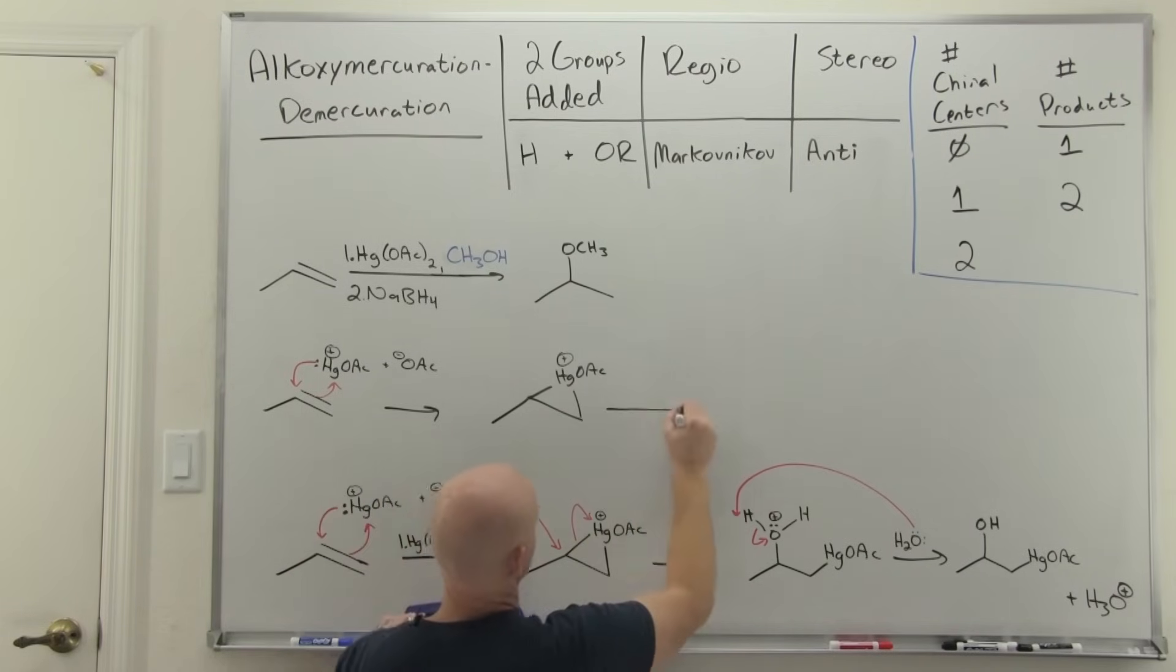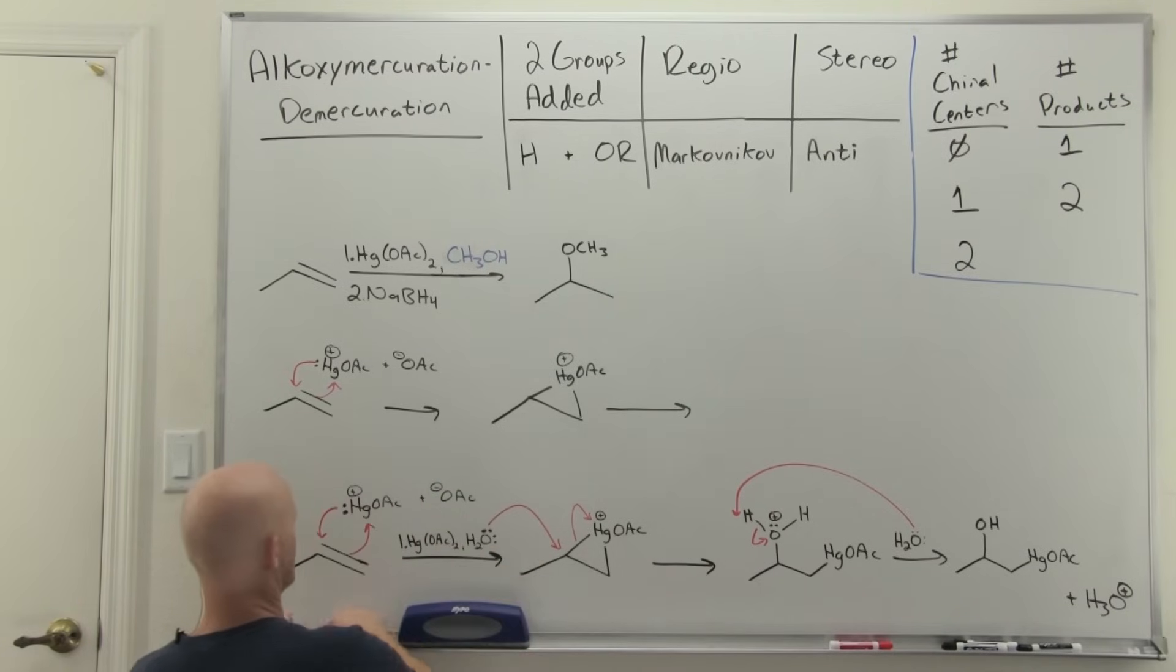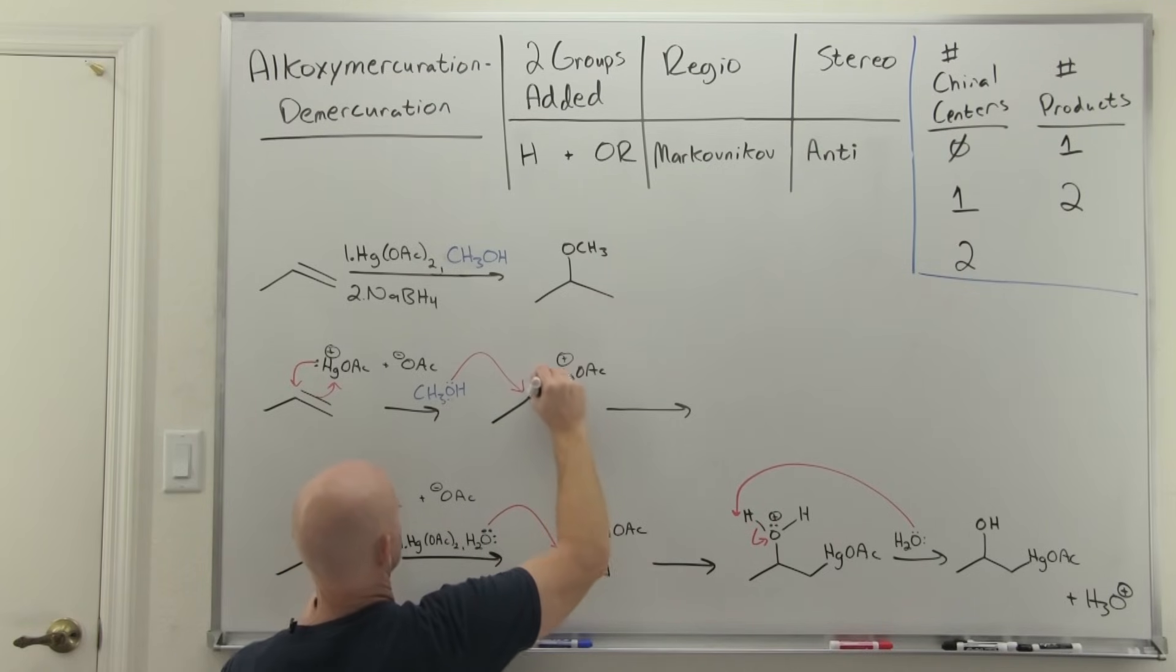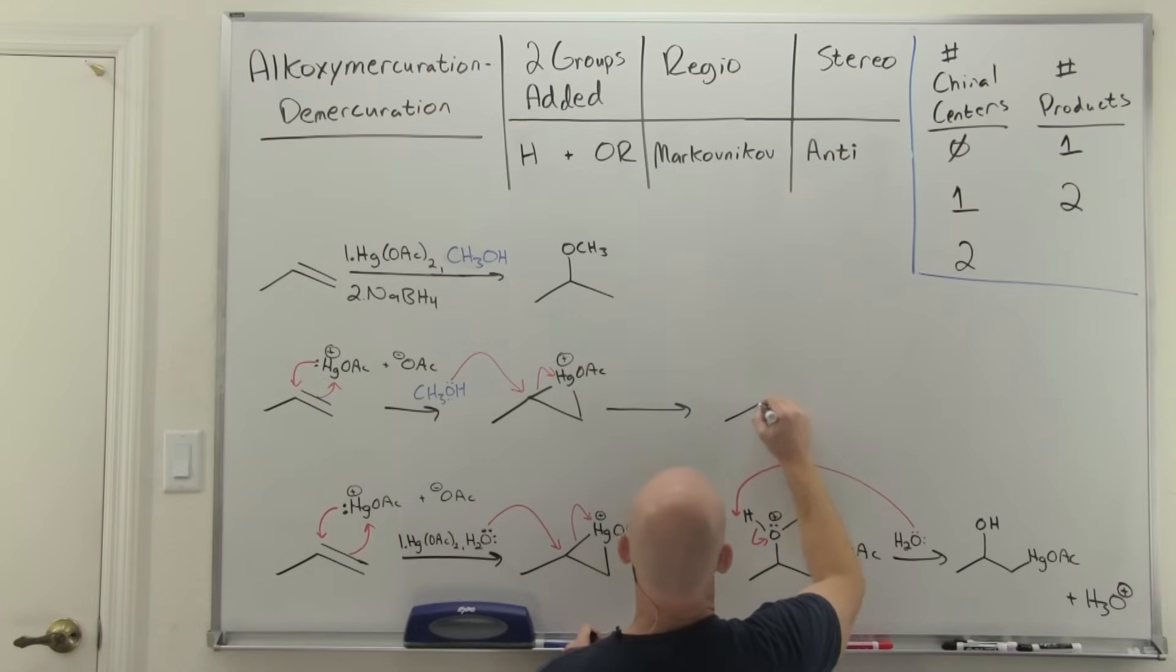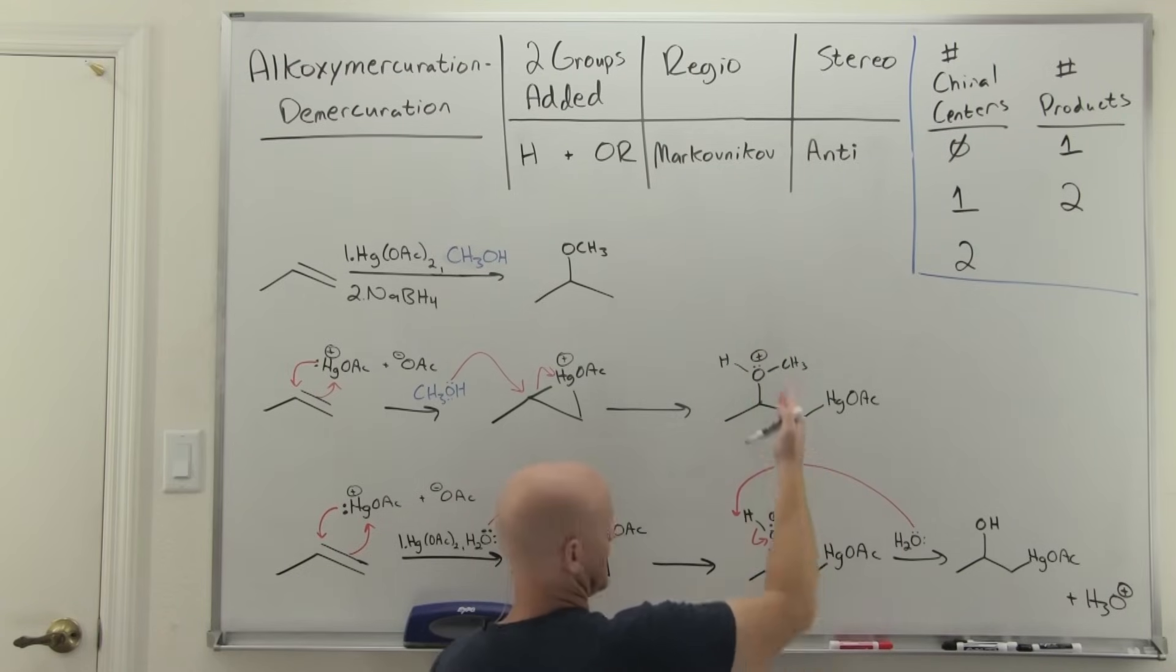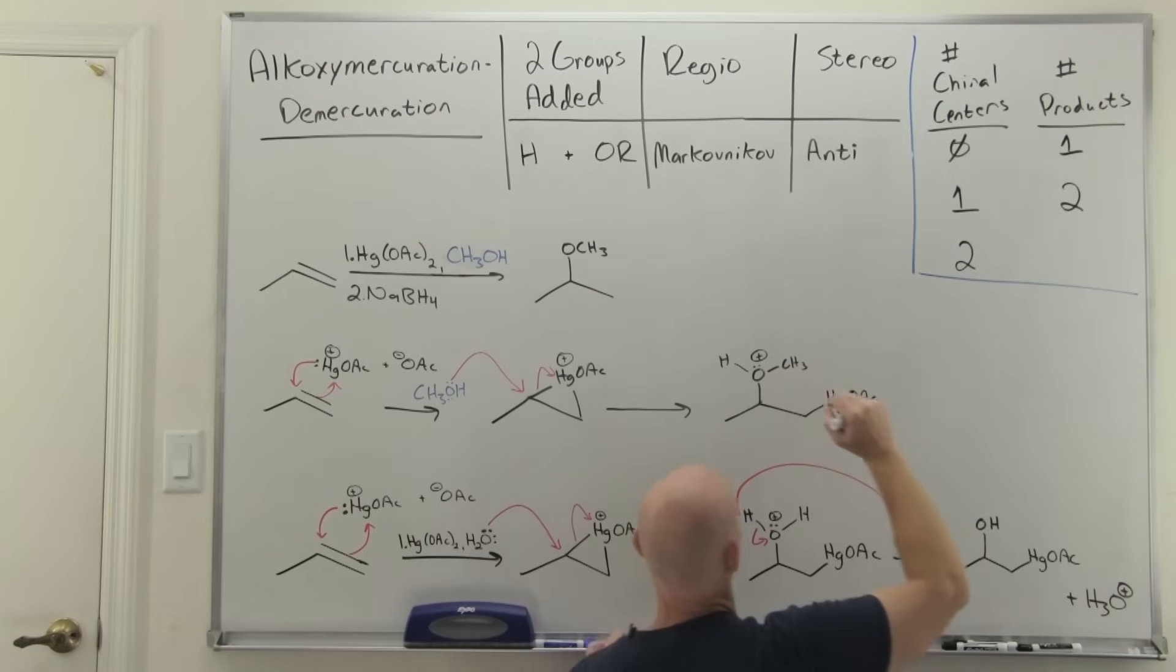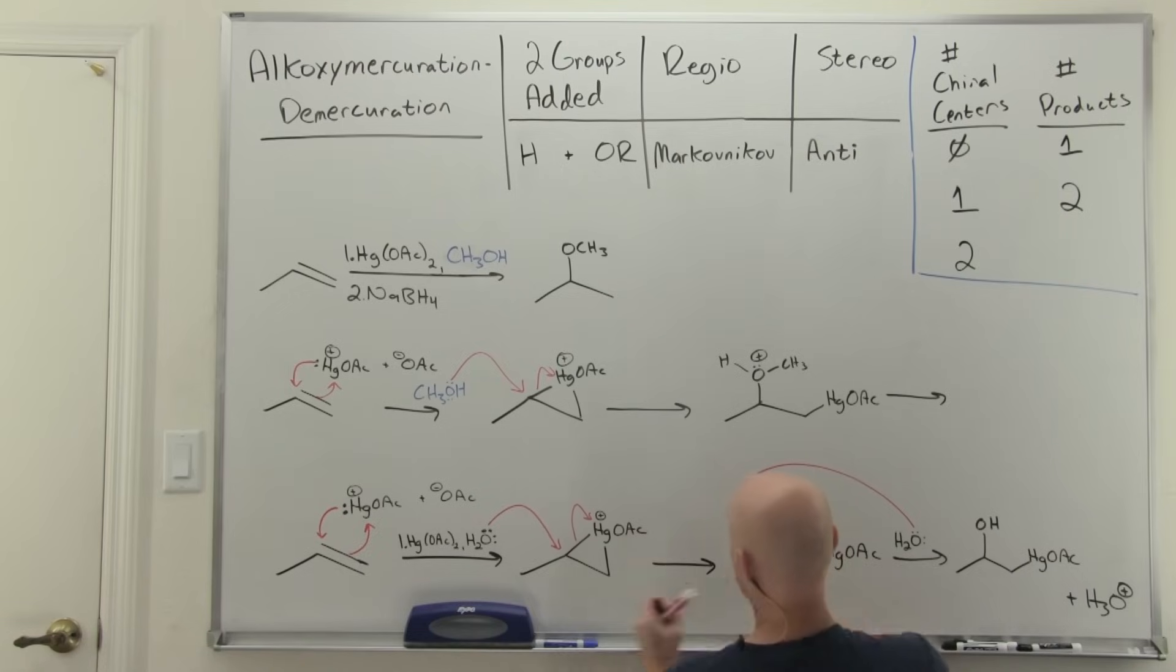So there's our mercurinium ion, and instead of having a water molecule come in and attack, again this is taking place in methanol instead, and that's what actually is going to come and do backside attack here on the more substituted carbon opening up our three-membered ring. Cool, and again we had a neutral nucleophile attack, so forming a positive formal charge intermediate here, and we'll deprotonate, but instead of water in our solvent, again methanol is our solvent.